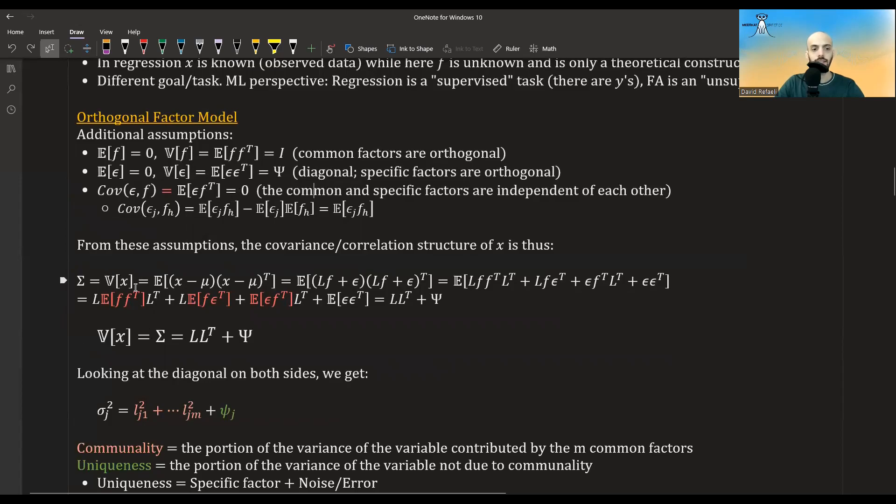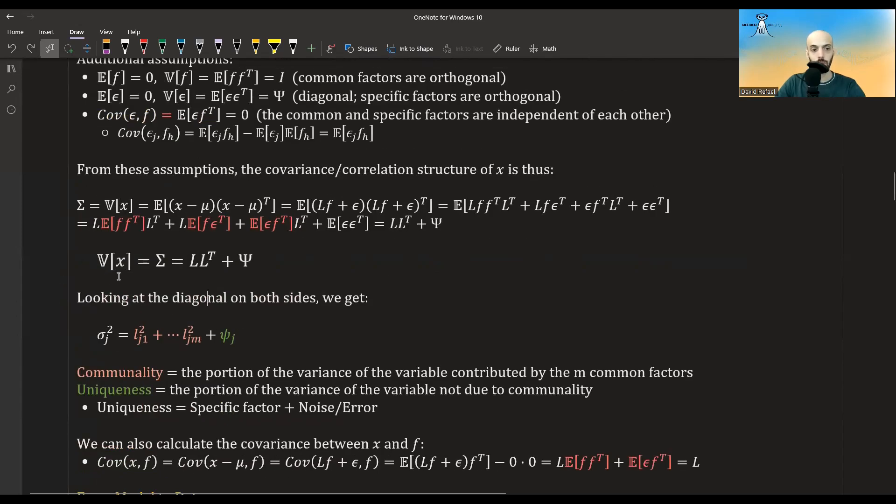Okay, given these assumptions, we could calculate the covariance structure of x. So we could calculate the variance covariance matrix of x. We will denote it by capital sigma. It's just equal to this thing over here. If we now plug, instead of x minus mu, the model that we assume, the linear model, so l times f plus epsilon, we get this. If we open the parenthesis, we get this. If we now distribute the expected value to the actual random variables here, we will get these, and now this is zero and this is zero by the assumptions, this is the identity matrix by the assumptions, and this is equal to some diagonal matrix which we call Psi, capital Psi. So overall we got that the variance of x is equal to l times l transpose plus Psi.